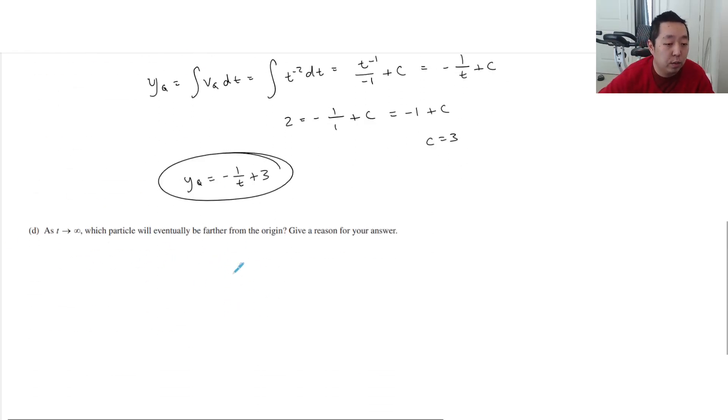As t goes to infinity, which particle will eventually be farther from the origin? Give a reason for your answer. Okay, so let's look at Yq. We know that as that goes to infinity, so as t goes to infinity, what does Yq go to? Well, I have an equation for Yq. Yq is going to approach 3 because as t goes to infinity, this whole thing is going to go to 0. So Yq approaches 3.